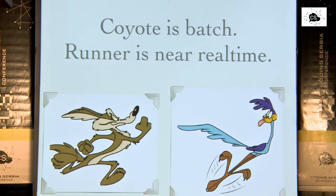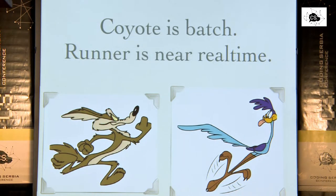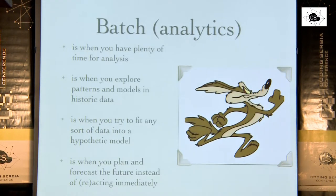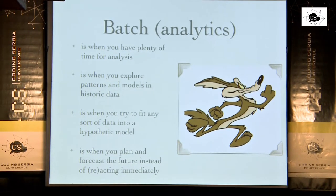No matter how hard Coyote tries he always loses, but he never stops trying. The Road Runner always wins, probably not because he's that savvy, but just because the other guy always fails on himself. So now we're at the technical point: Coyote is what you would call batch processing, and the Road Runner is what you would call near real-time or real-time. Can we agree on this separation?